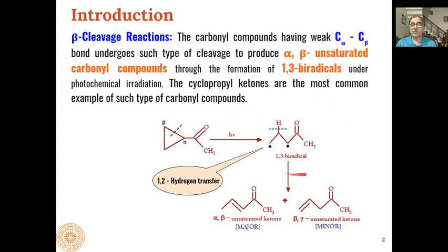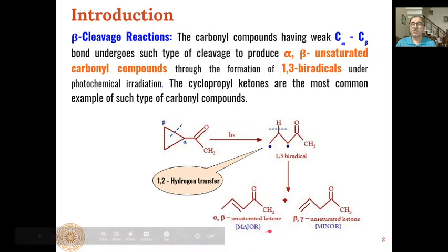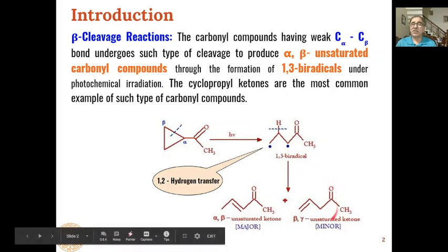Such beta cleavage reactions produce alpha-beta unsaturated carbonyl compounds through the formation of 1,3-biradicals. These radicals, through a 1,2-hydrogen transfer, get converted into alpha-beta unsaturated carbonyl compounds as the major product, whereas beta-gamma unsaturated ketones are formed as the minor product.